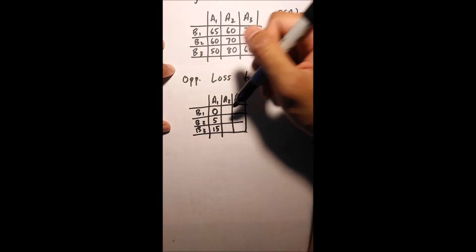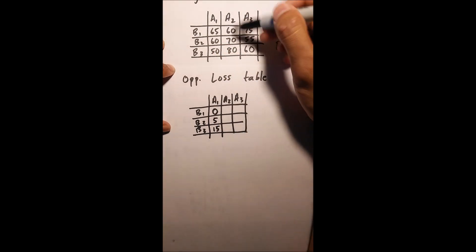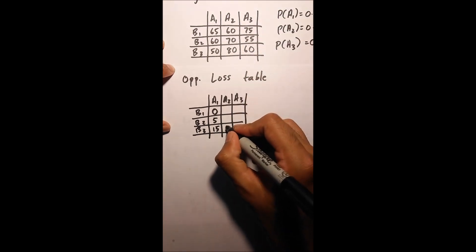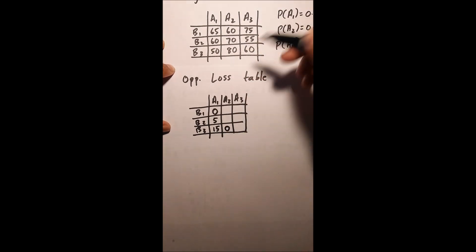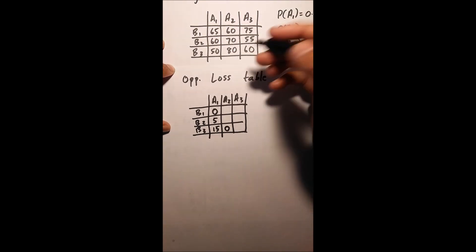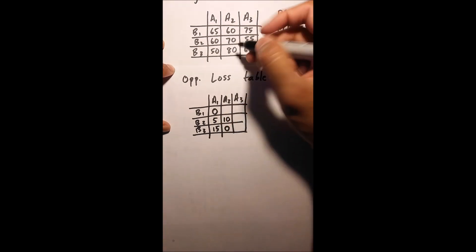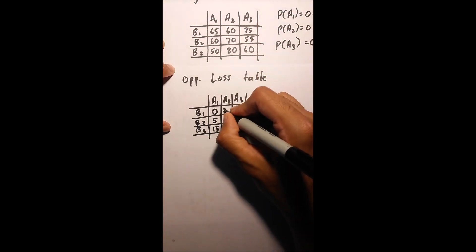I'm going to go to the next column and do the exact same thing. So my highest value in column number A2 is 80, so I'm going to replace that with a 0. Then I'm going to do 80 minus 70, which is 10, and 80 minus 60, which is 20.